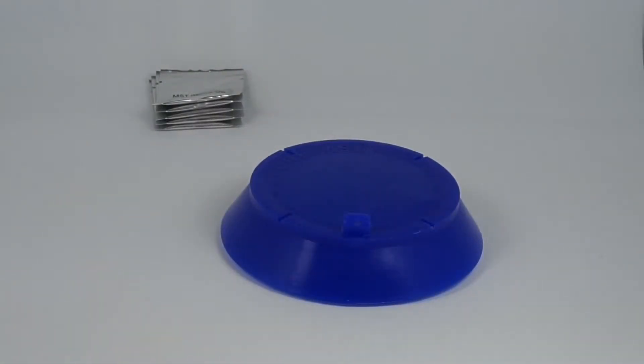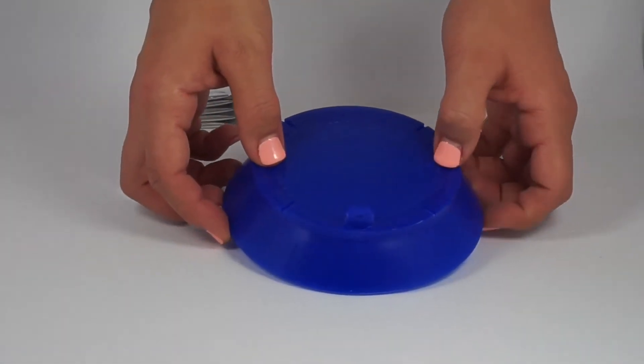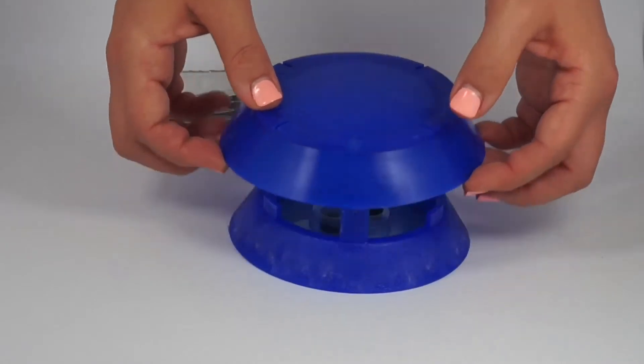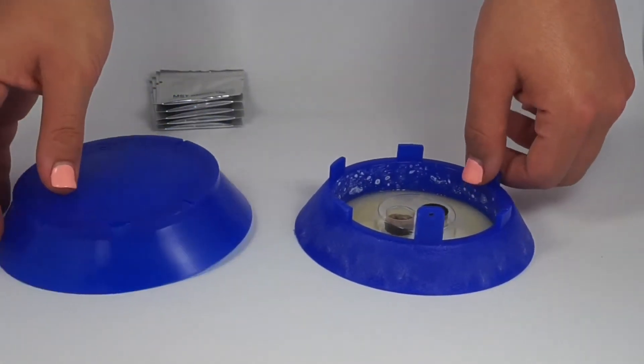If you need to remove the lid to monitor the progress of the trap's catch, you simply push down on the hook and the lid will come away from the base. This can also be done to change the cartridge when needed.